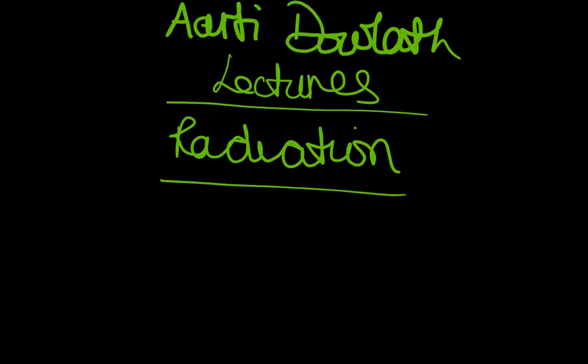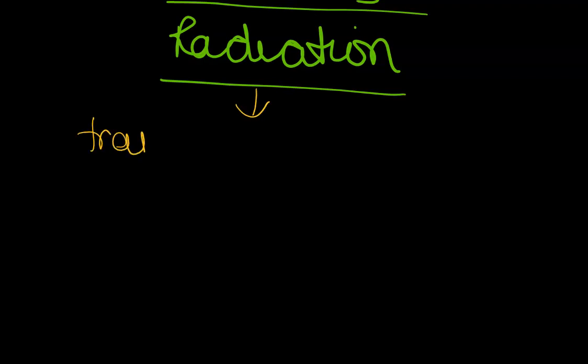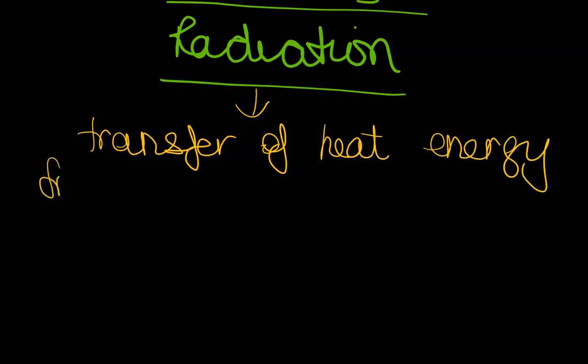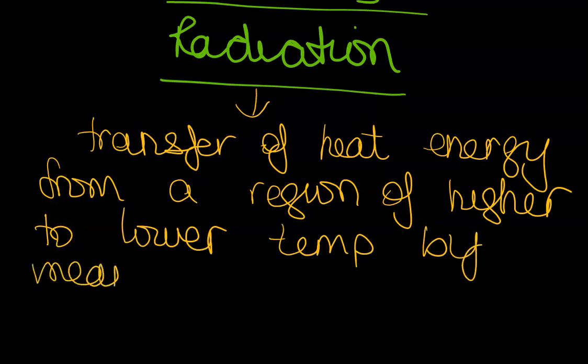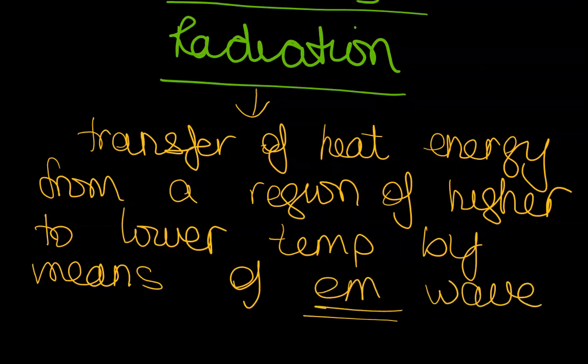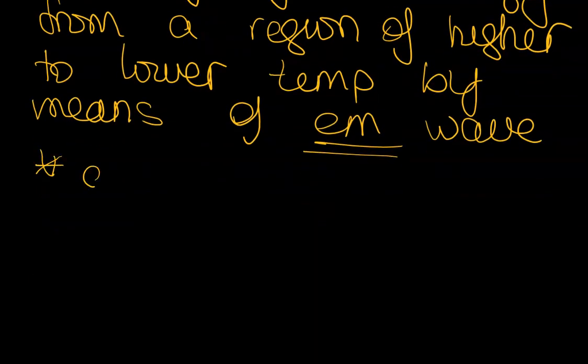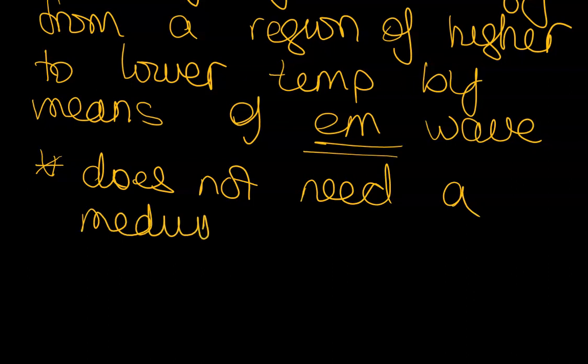Now let's look at the third method which is radiation. By definition it is the transfer of heat energy from a region of higher to lower temperature by means of electromagnetic waves. EM waves can occur through a vacuum so they do not need a medium in order to transfer that heat energy. The main characteristic of radiation is that it does not need a medium to transfer energy.